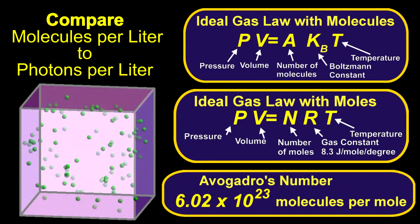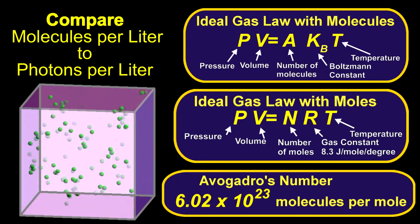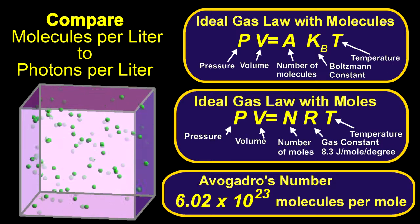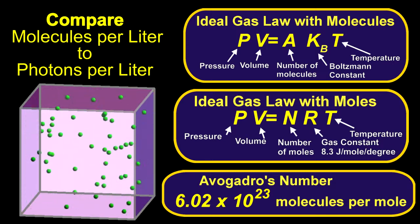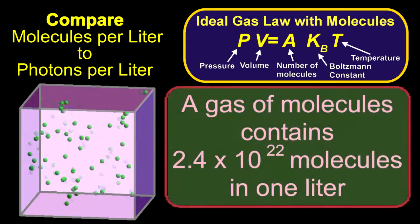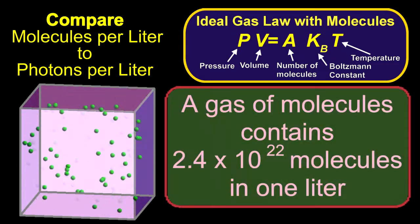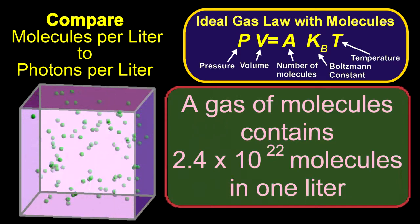Today we learned that one mole contains 6.02 times 10 to the 23rd molecules, which is known as Avogadro's number. A smart high schooler can calculate that one liter of gas at normal atmospheric pressure and temperature contains about 2.4 times 10 to the 22nd molecules.